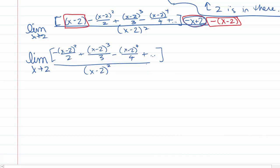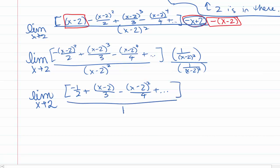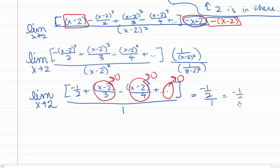We divide everything through by (x-2)², getting -1/2 + (x-2)/3 - (x-2)²/4 + ⋯ all over 1. As x goes to 2, every term with a factor of (x-2) goes to 0, and the only thing remaining is -1/2. So the limit equals -1/2. You could verify this with L'Hôpital's rule, which also works on this problem.